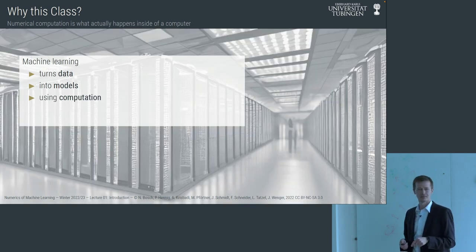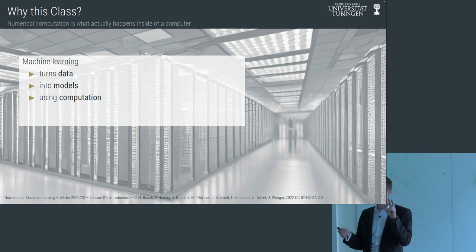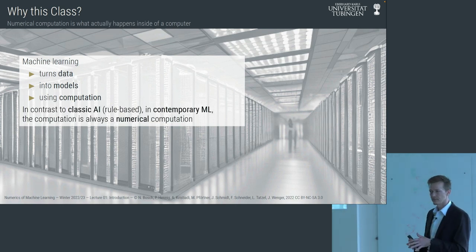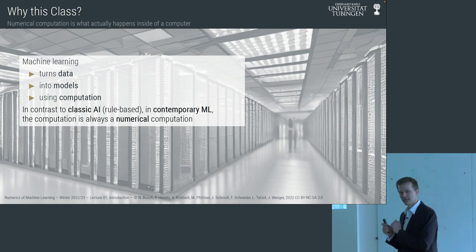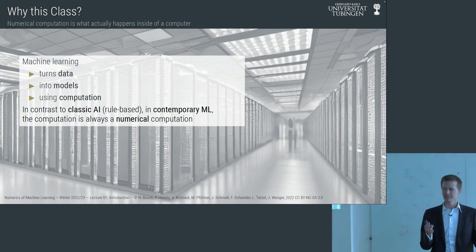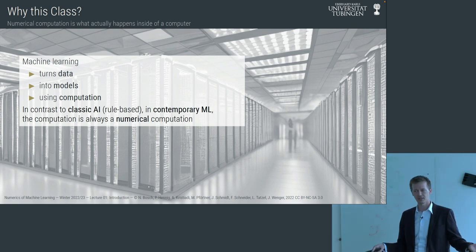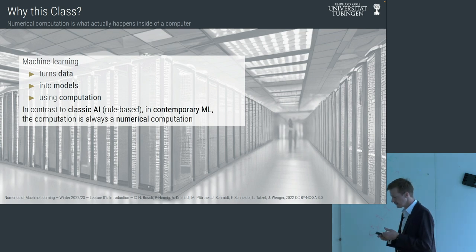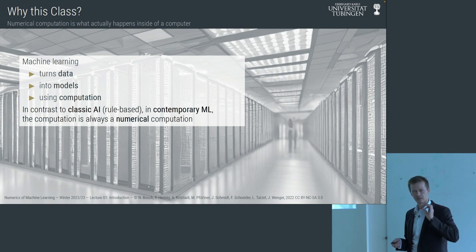In contrast to classic AI — rule-based AI — contemporary machine learning algorithms use numerical algorithms as the primitives for these computations. Classic AI algorithms are things like nearest neighbor or alpha-beta search: algorithms that just run, find an answer, and you know they've done the right thing. Numerical algorithms are different. We're going to talk about them for the whole lecture today. They are linear algebra methods, simulation methods, integration methods, and optimization methods.